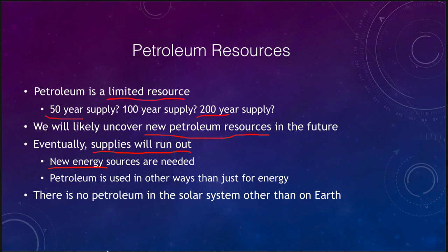We do need new energy sources. Petroleum is not just used for energy — it's used in a lot of other things as well. It is based on living organisms — dead organisms from millions of years ago — which is why we call it fossil fuel. We are not going to find petroleum supplies anywhere other than here on Earth, though we may find a supply of uranium elsewhere in the solar system.